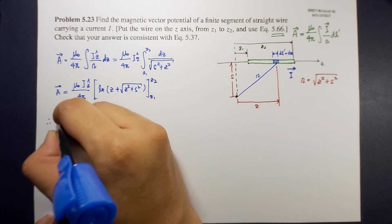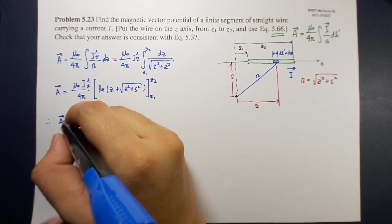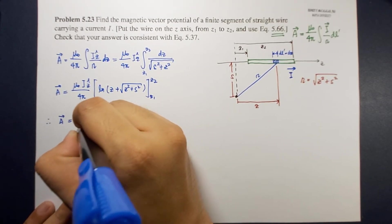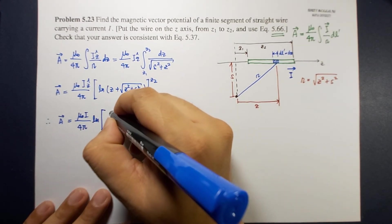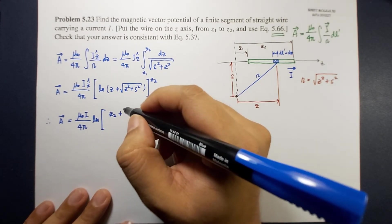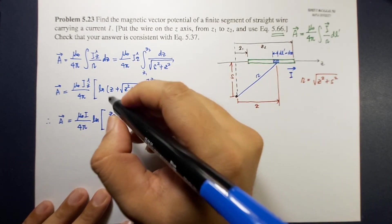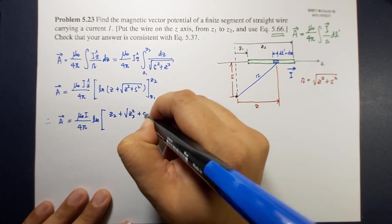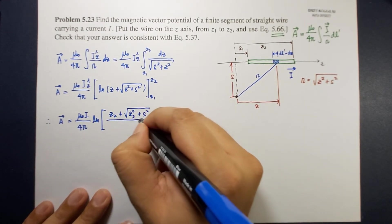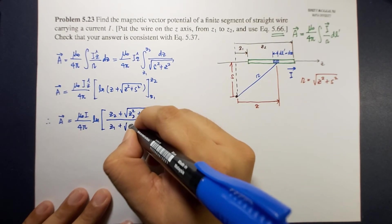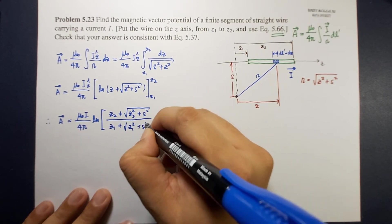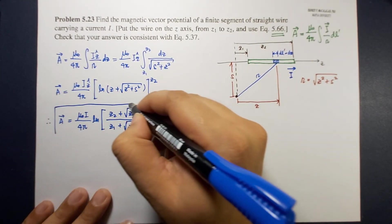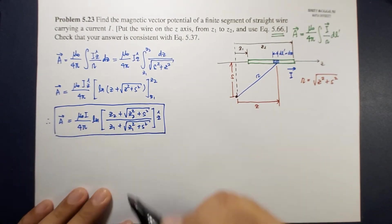So therefore our magnetic vector potential A is now equal to mu naught i over 4 pi times the natural logarithm of z2 plus square root of z2 squared plus s squared divided by z1 plus square root of z1 squared plus s squared, z hat. So this is now your vector potential.